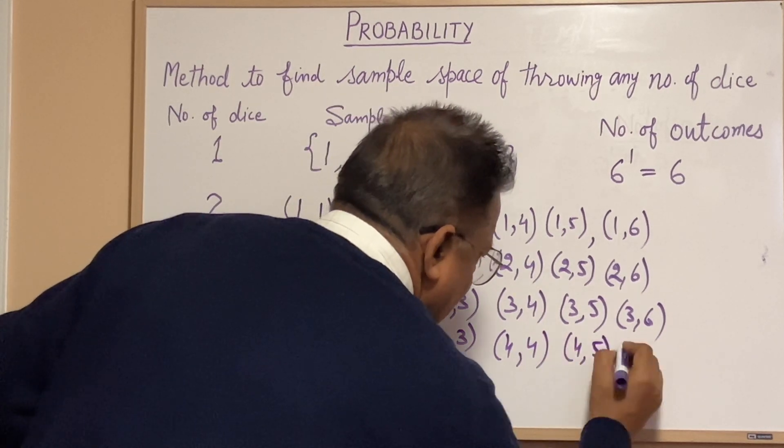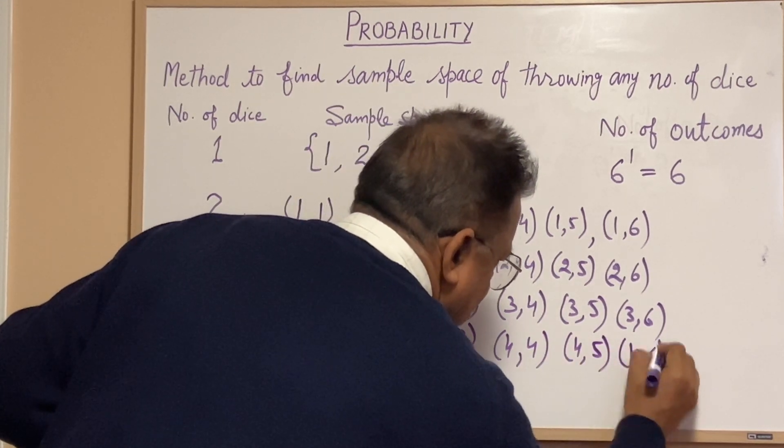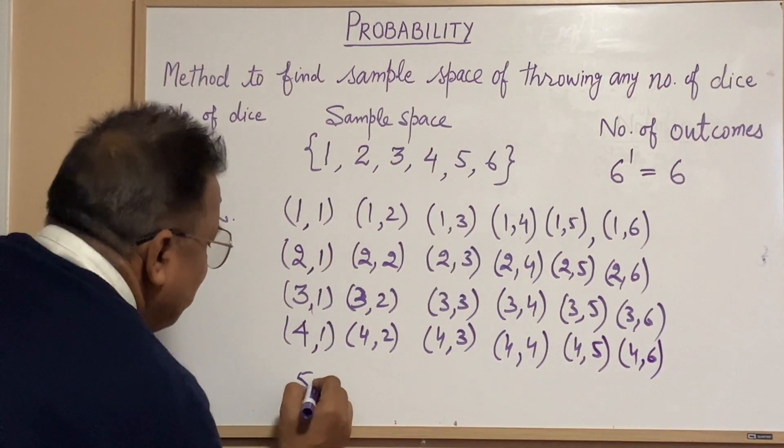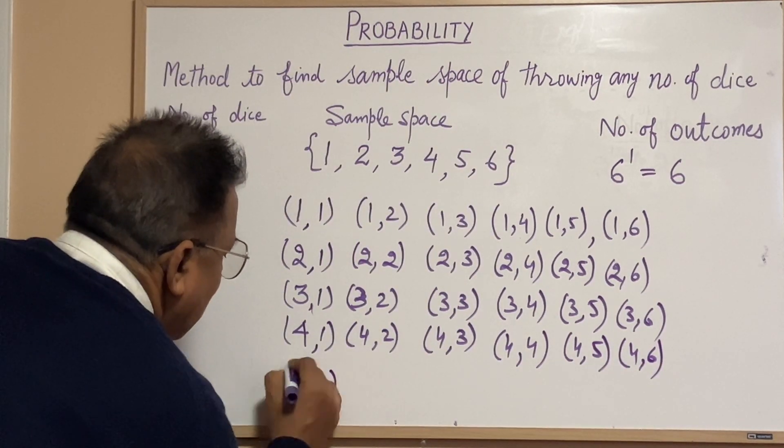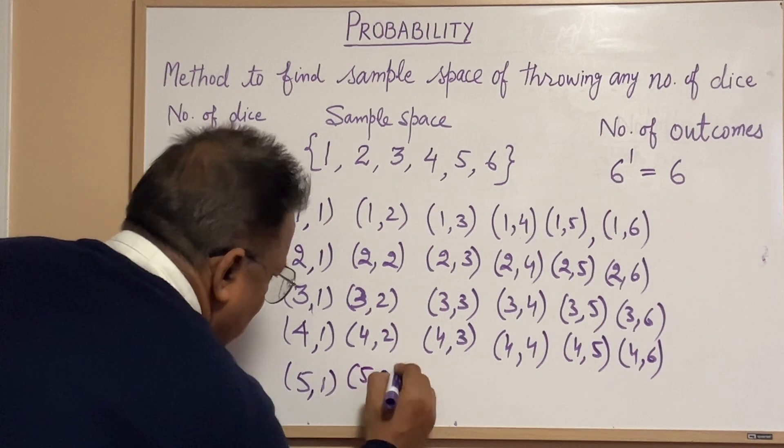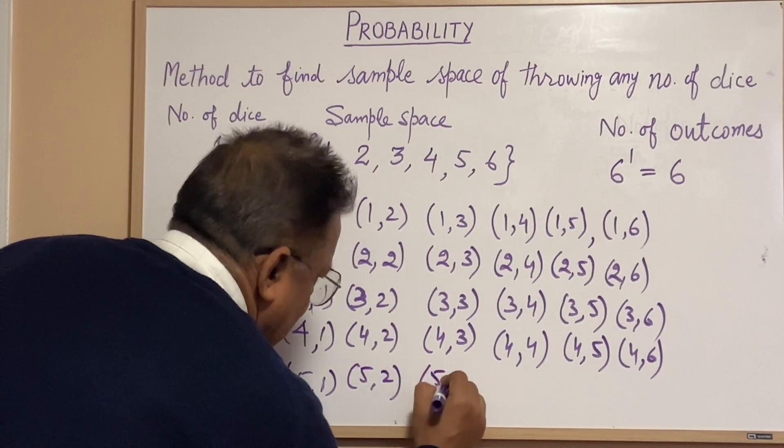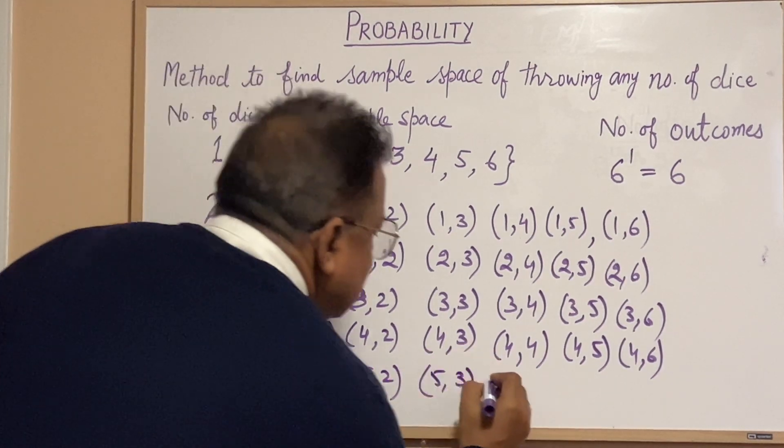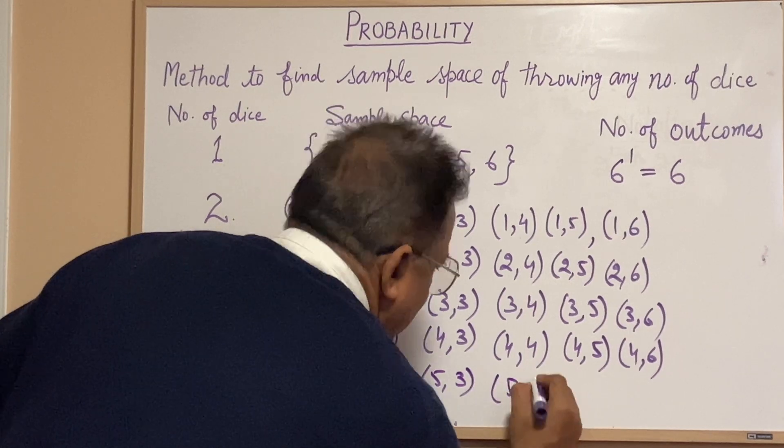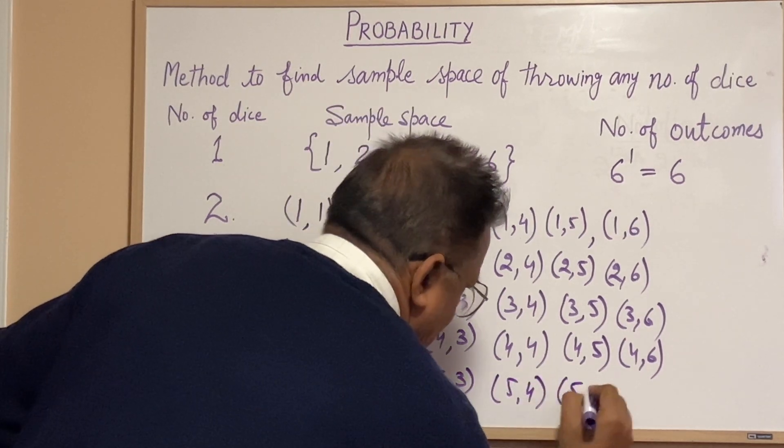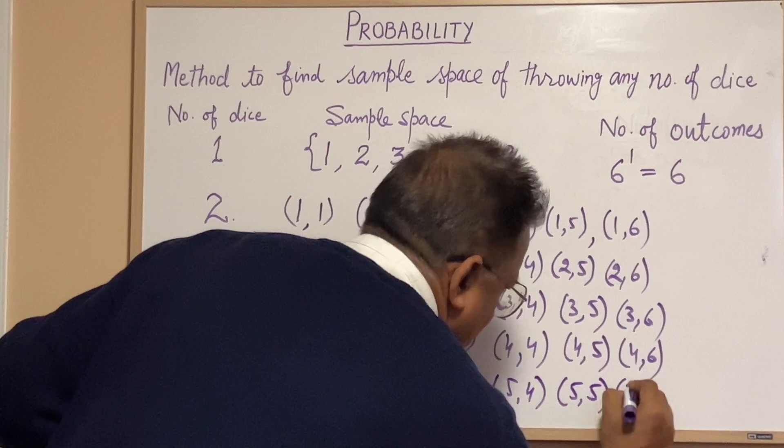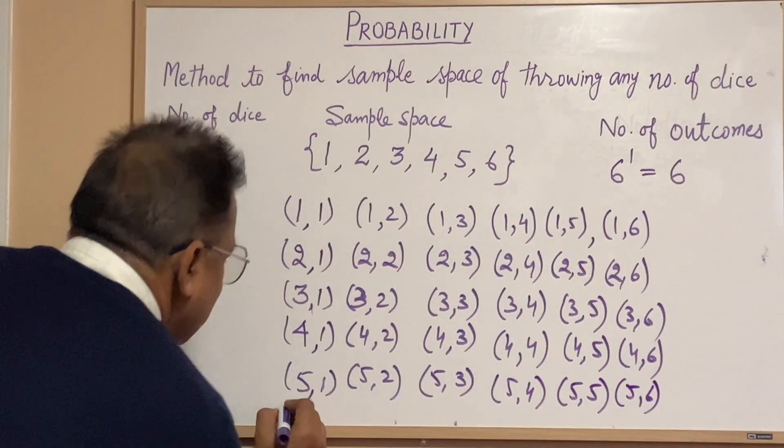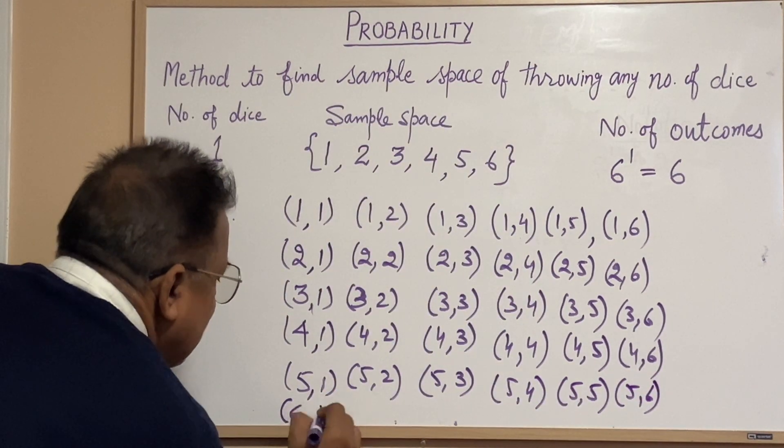Then five: five one, five two, five three, five four, five five, five six. Then we come to six, that is the last one: six one, six two, six three, six four, six five, six six.